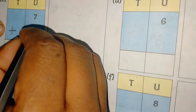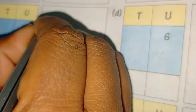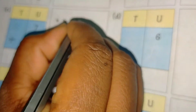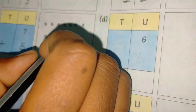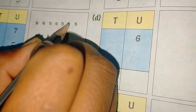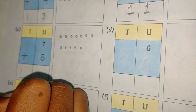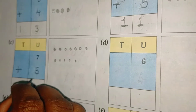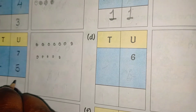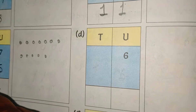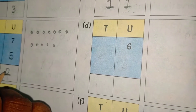The given number is 7. Seven plus 5: we draw 7 dots — 1, 2, 3, 4, 5, 6, 7 — and 5 dots — 1, 2, 3, 4, 5. Counting all together: 1 through 12. Since 12 is bigger than 9, we put 2 in the unit place and carry 1 to the tens place. Seven plus five equals twelve.